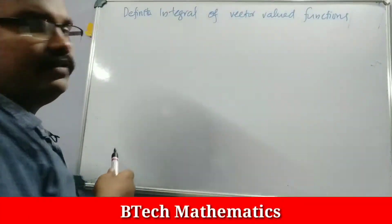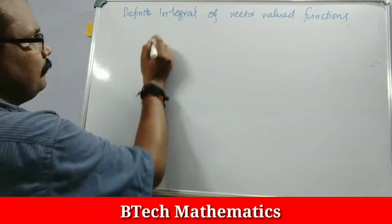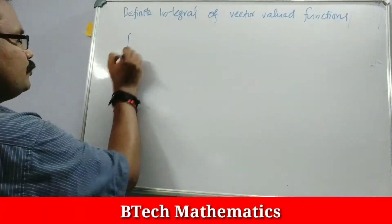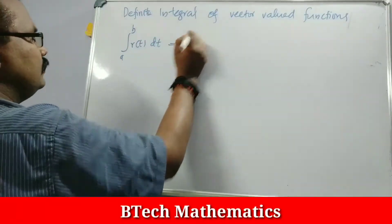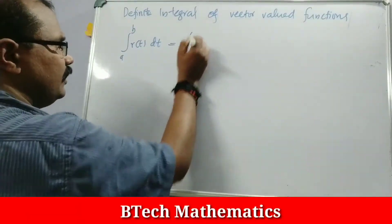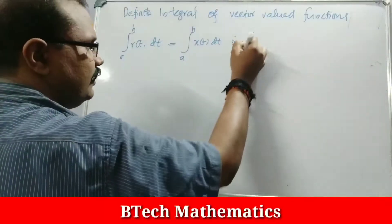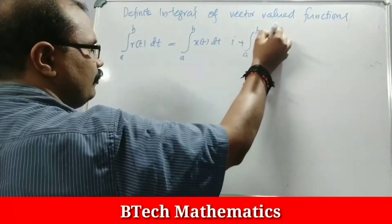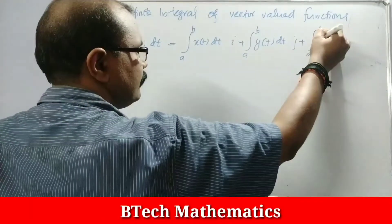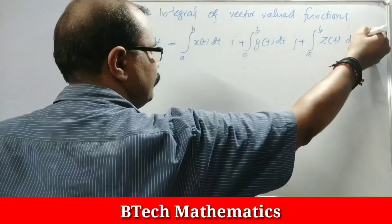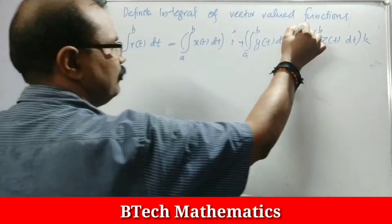Next, the definite integral of a vector valued function. The integral from a to b of R of T dt is computed component-wise: integral a to b of X of T dt times i, plus integral a to b of Y of T dt times j, plus integral a to b of Z of T dt times k.